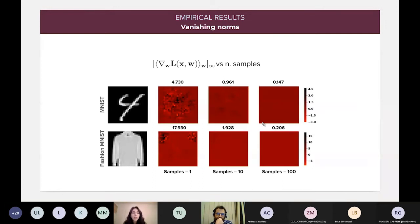Now, the second example just wants to give you an insight on what it visually means that these gradients are vanishing. So, here we are computing, basically, the expected loss gradients and also the infinite norms, which are shown on the upper part of the images, on two data sets, MNIST on the first row and fashion MNIST on the second row. And the red images are the actual perturbations that we are adding to these images, and as you can see, for an increasing number of samples, their norms tend to zero.